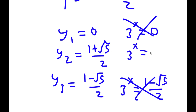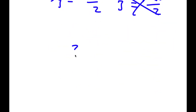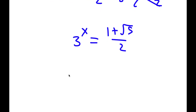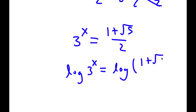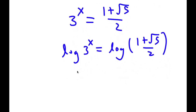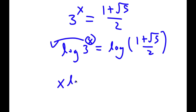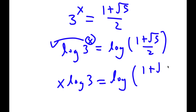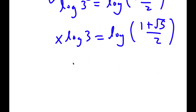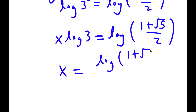So I'm left with 3 to the power of x is equal to (1 plus the square root of 5) over 2. Taking the log on both sides, I get log 3 to the power of x is equal to log of (1 plus square root of 5) over 2. Moving x to the front: x times log 3 equals log of (1 plus square root of 5) over 2. Dividing both sides by log 3, I get x equals log of (1 plus square root of 5 over 2) over log 3.